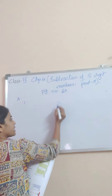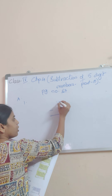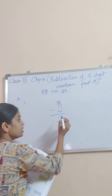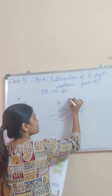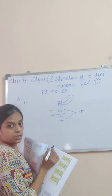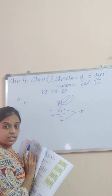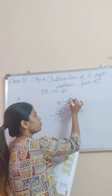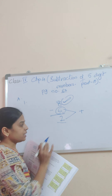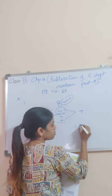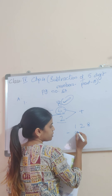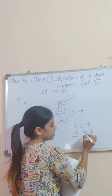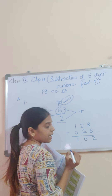Now suppose if I am subtracting 8 minus 6 — 8 minus 6 is how much? The answer is 2. Now suppose the number is 128 minus 026. The answer: 8 minus 6 is 2, 2 minus 2 is 0, 1 minus 0 is 1. So the answer is 102.